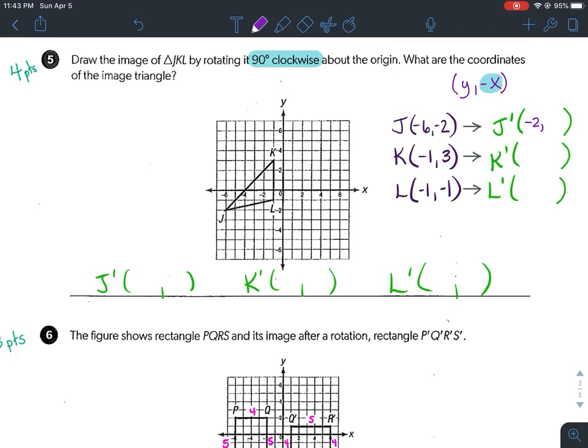Positive 6. So J prime is (-2, 6). Now what you need to do, let me go ahead and graph that. So (-2, 6) right up here would be J prime. I will tell you that the figures do kind of overlap one another a little bit.